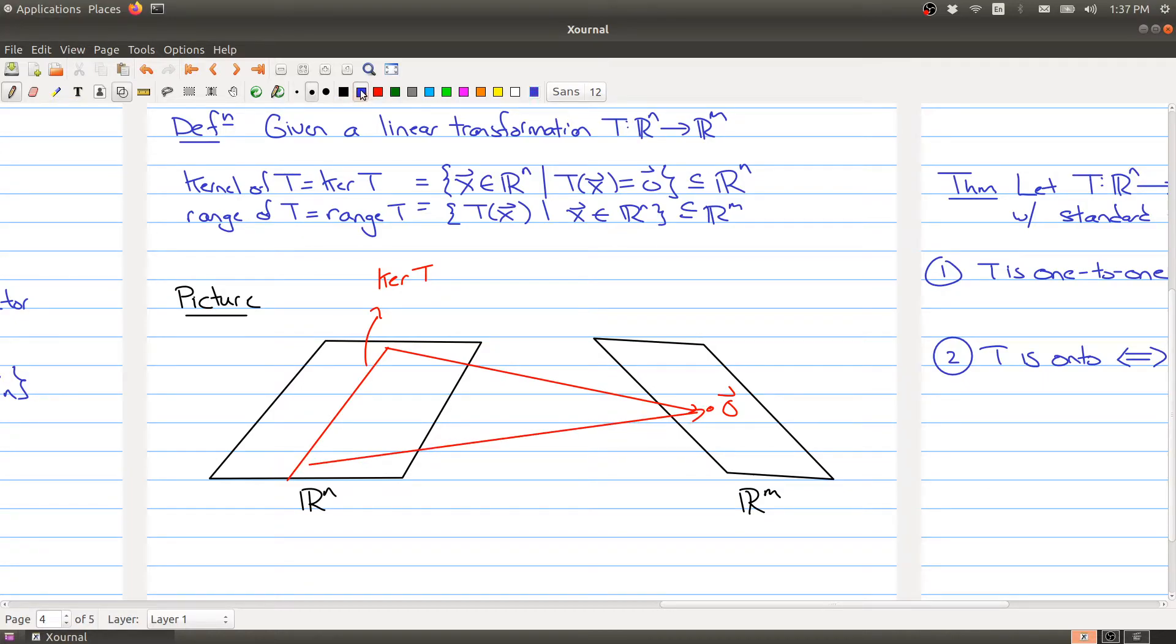On the other hand, the range of T will include the zero vector, because zero is going to be definitely in the range, but it could be bigger. And this would be the range of T over here. And what that means is if you take any point over here, it ends up somewhere on the blue line. So everything inside of Rn gets mapped over to the blue line.